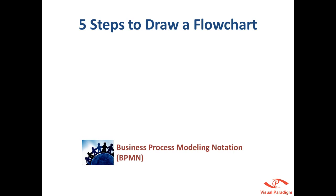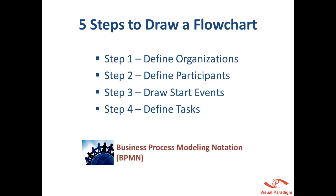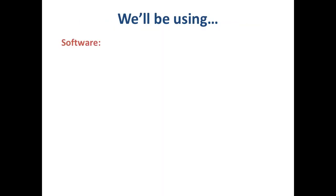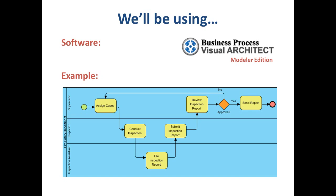To begin with, we'll define the companies involved, followed by specifying people who participate in it. Next, we'll go into how to mark the beginning of a process. Then we'll talk about defining things to be done. To finish off, we'll cover how to define decisions. In the demo part, we'll be using Business Process Visual Architect, the model edition from Visual Paradigm, and we'll show you how to draw the Business Process Diagram example below. It describes a fire safety inspection process in a fire and safety services company.